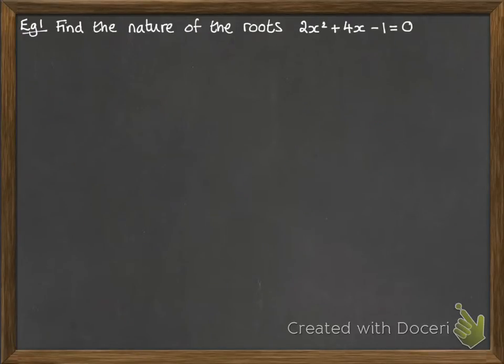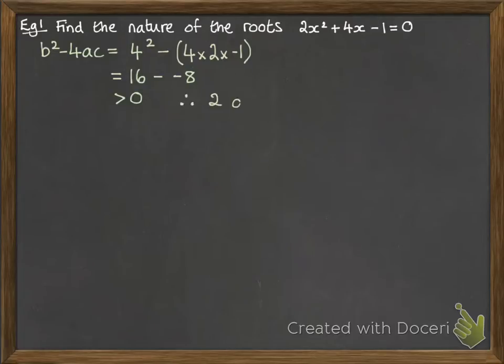Let's have a look at some examples. Find the nature of the roots of this equation. We need to look at the discriminant, substituting in those values of b, a, and c. When we work that out, we get 16 minus negative 8, which is positive. That means we have two distinct real roots, distinct meaning two separate numbers, not a repeated root.